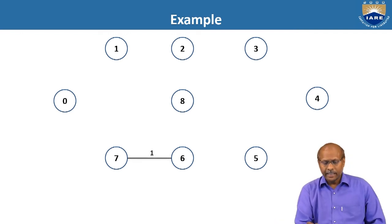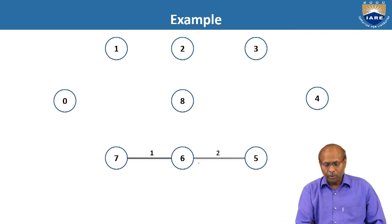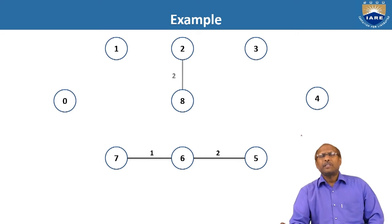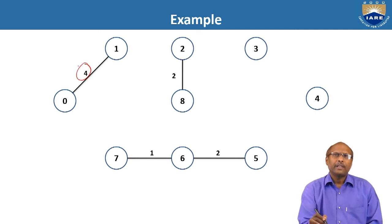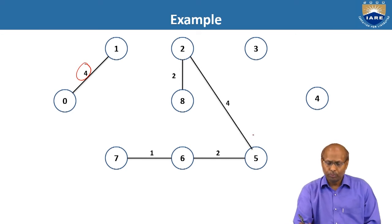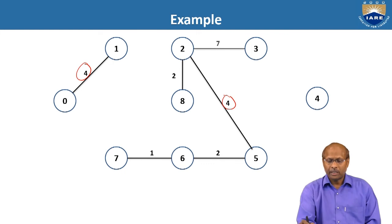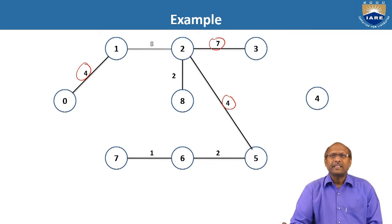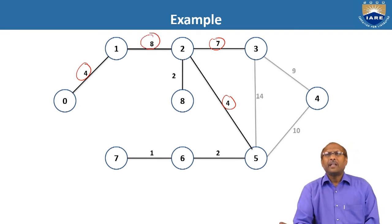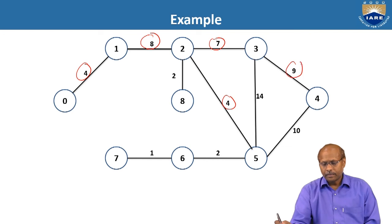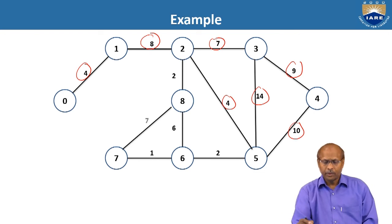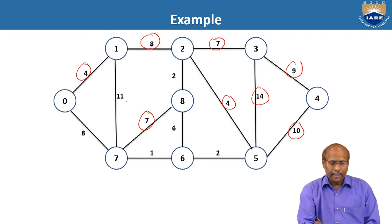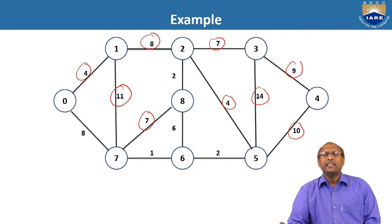Assume you have a graph with 9 vertices (0 to 8). There is an edge between 7 and 1 with weight 1, between 5 and 6 with weight 2, between 2 and 8 with weight 2, between 1 and 0 with weight 4, between 2 and 5 with weight 4, between 2 and 7 with weight 7, between 1 and 2 with weight 8, between 3 and 4 with weight 9, between 4 and 5 with weight 10, between 3 and 4 with weight 14, and between 7 and 8 with weight 7, and between 1 and 7 with weight 11.